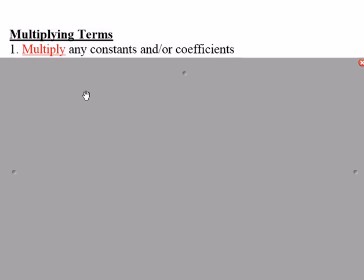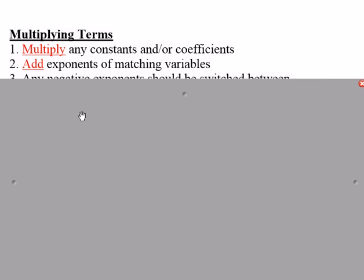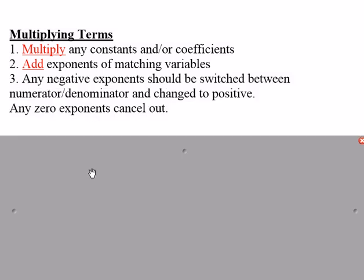When we do start multiplying terms, so you're going to go one term times another one, you multiply the constants or coefficients, the numbers in front, and then you add the exponents. At the end, make sure that you don't have any negative exponents or zero exponents. Those need to be simplified.